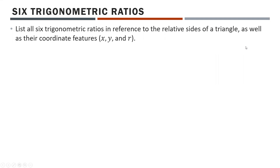So what we're going to start with today — this is not in the notebook, but I want to make sure we've understood everything we've learned in the last day or two. Six trigonometric ratios. As we've discovered, it's not just sine, cosine, and tan. We also have cosecant, secant, and cotangent.